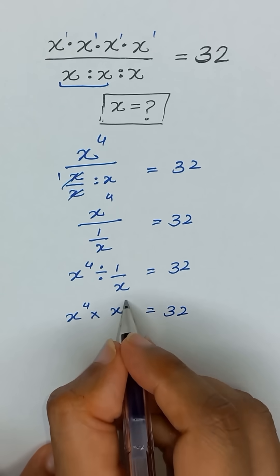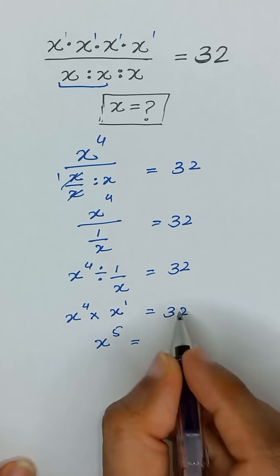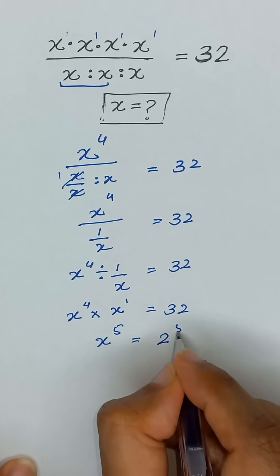Again, the bases are the same, so we can add the powers. It becomes x to the power 5 equals 32, which is the same as 2 to the power 5.